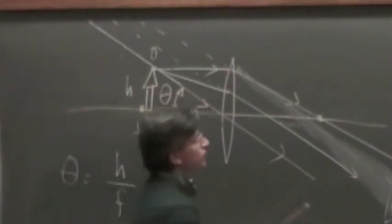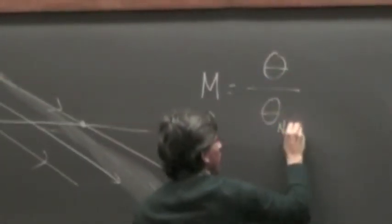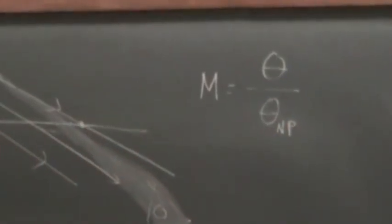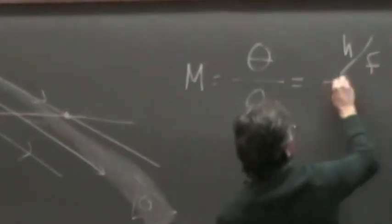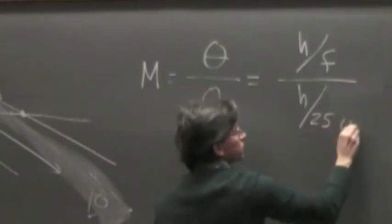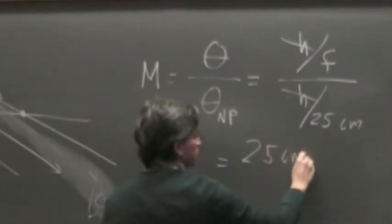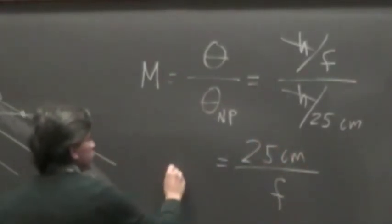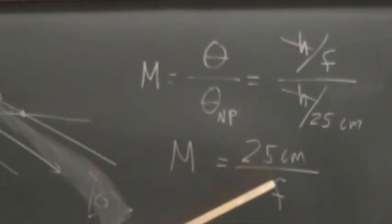If you compare that with looking at the same object of height h at 25 centimeters without the magnifying glass — theta_NP equals h over 25 — and compare theta equals h over f with theta_NP equals h over 25, you get that the more usual magnification number for a magnifying glass is 25 centimeters divided by the focal length. The smaller the focal length of the lens, the bigger the magnification.